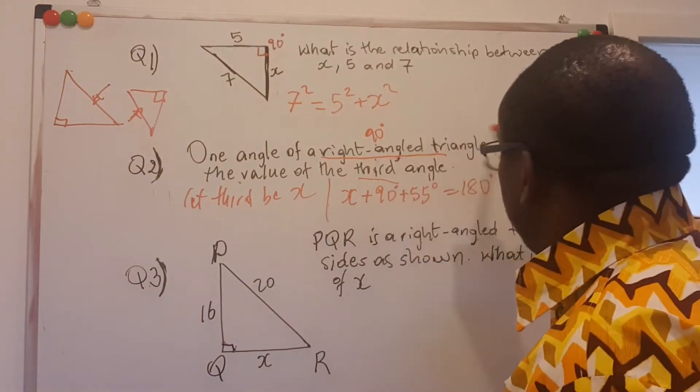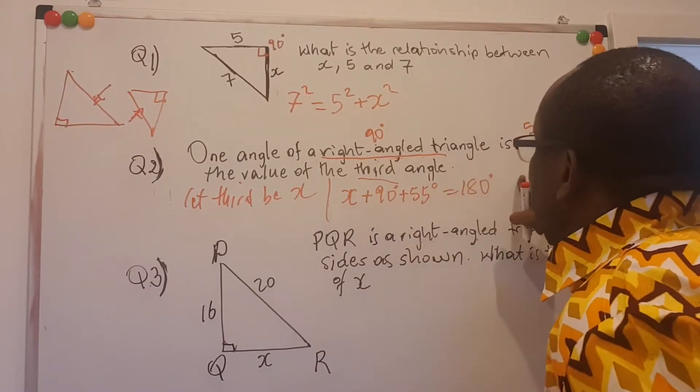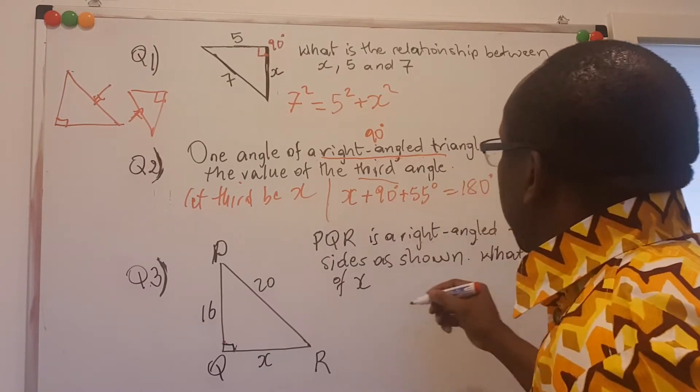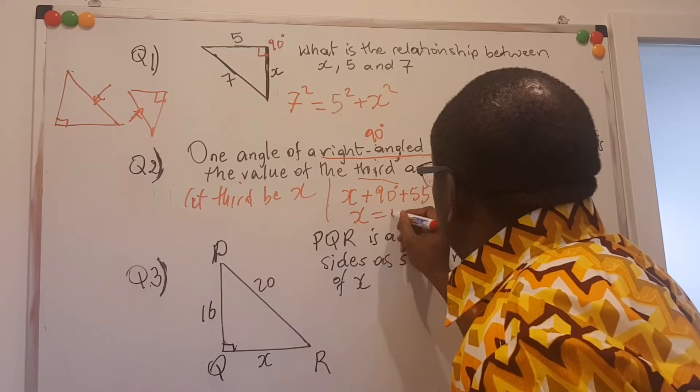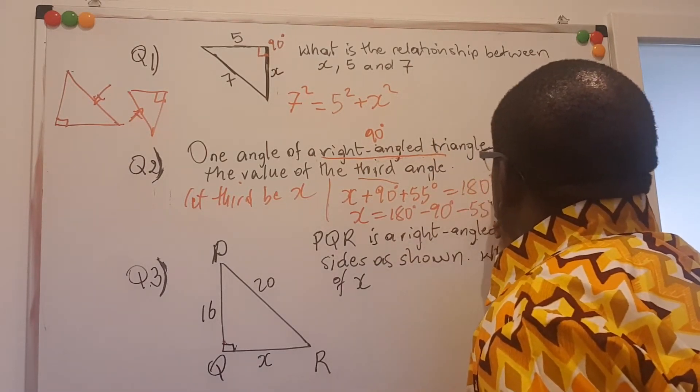So I can take this to the other side in order to make x the subject, which will be my answer. But when 90 goes that way, it becomes minus 90. When 55 goes opposite the equality, it becomes minus 55. So x then is equal to 180 degrees minus 90 degrees minus 55 degrees.